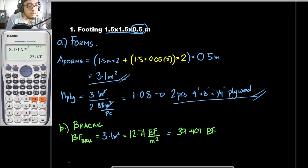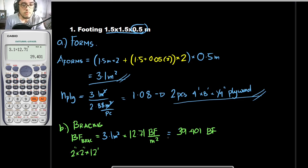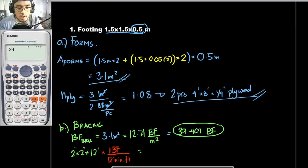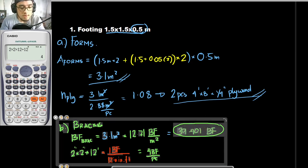If we are to use 2 inches by 2 inches by 12 feet lumber, for us to get the number of board foot of one piece, we multiply 2 by 2 by 12 divided by 12, which equals 4 board feet per piece. To get the number of 2×2×12 pieces, we divide the total board foot — 39.401 — by 4 board feet per piece. 39.401 divided by 4 equals 9.85, which we would round up to 10 pieces of 2×2×12.